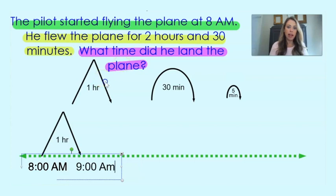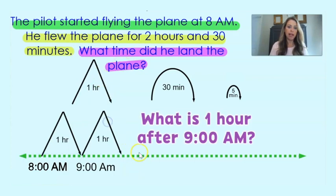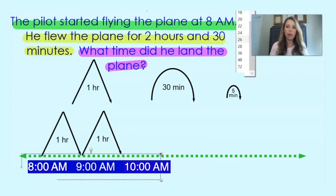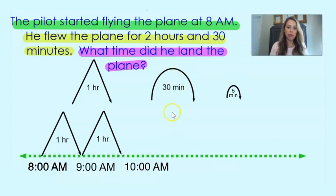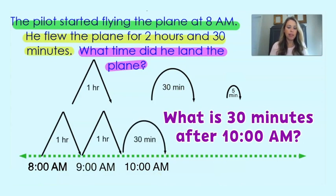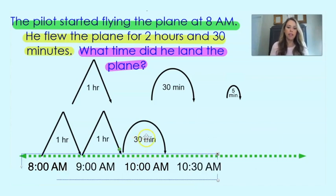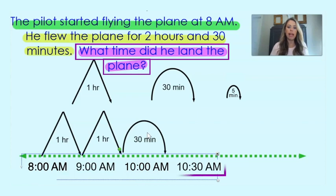Then I'm going to do another hour jump. So 9am and 1 hour later would be 10am. And then I know that I still need to jump another 30 minutes, so I'm going to do 1 more jump. 10am plus 30 minutes later would get us to 10:30am. So we know that the pilot, after flying for 2 hours and 30 minutes, landed the plane at 10:30am.